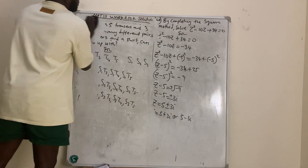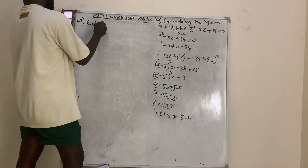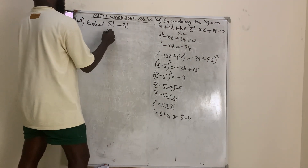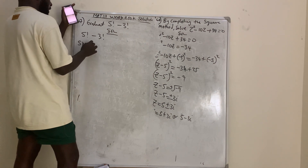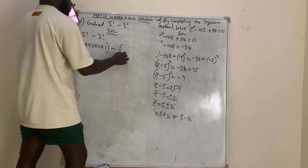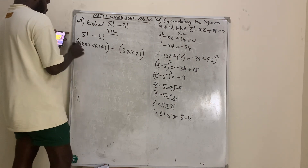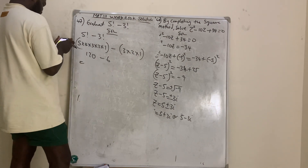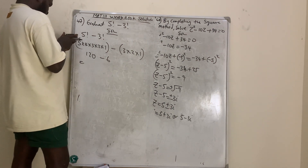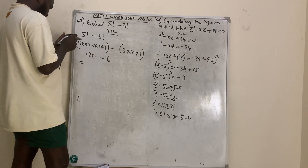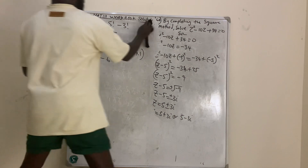Question number 47: evaluate 5 factorial minus 3 factorial. Solution: 5 factorial is 5 times 4 times 3 times 2 times 1 equals 120, and 3 factorial is 3 times 2 times 1 equals 6. So 120 minus 6 equals 114.